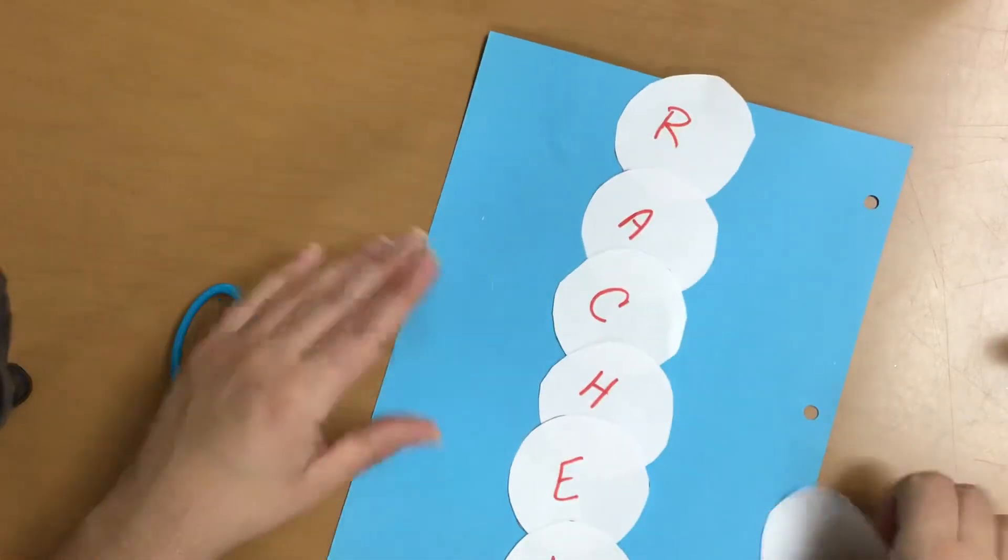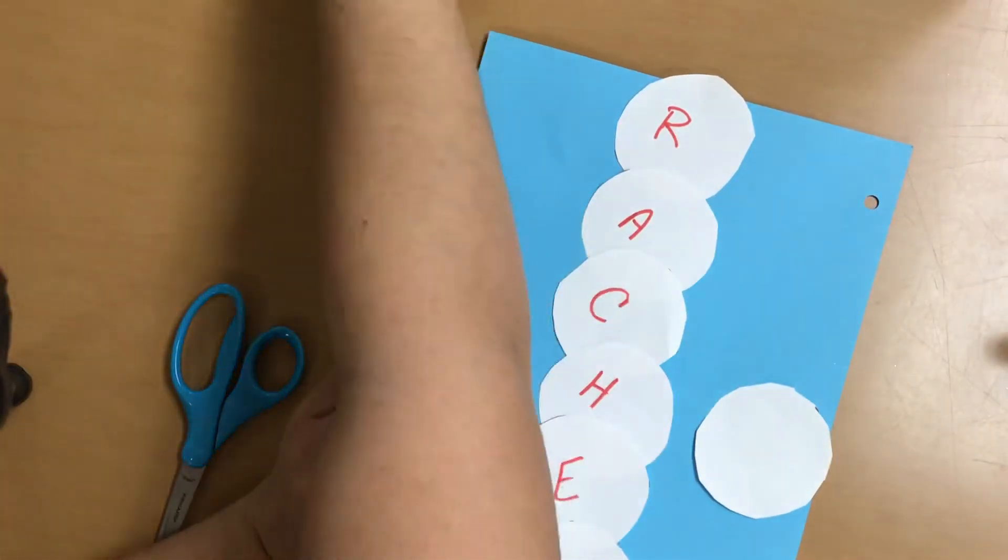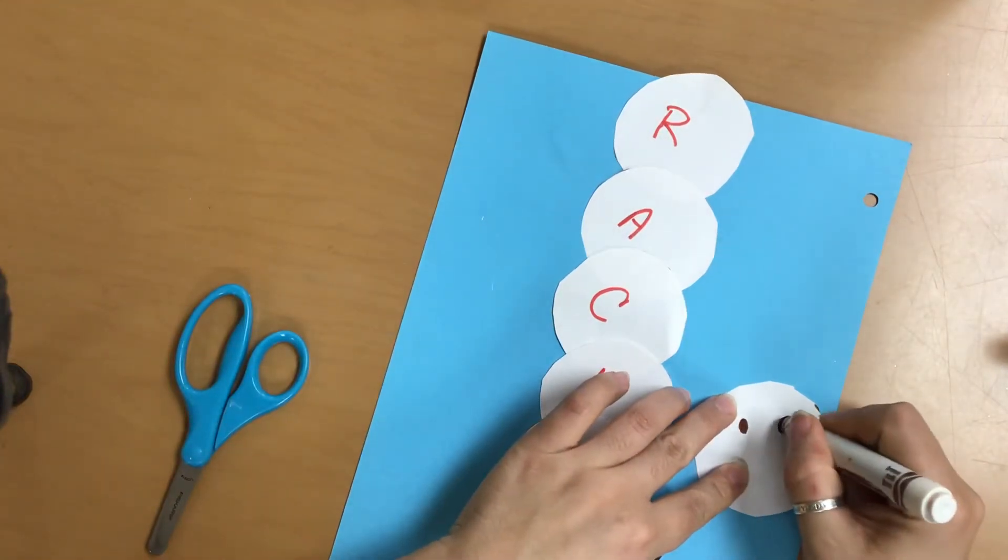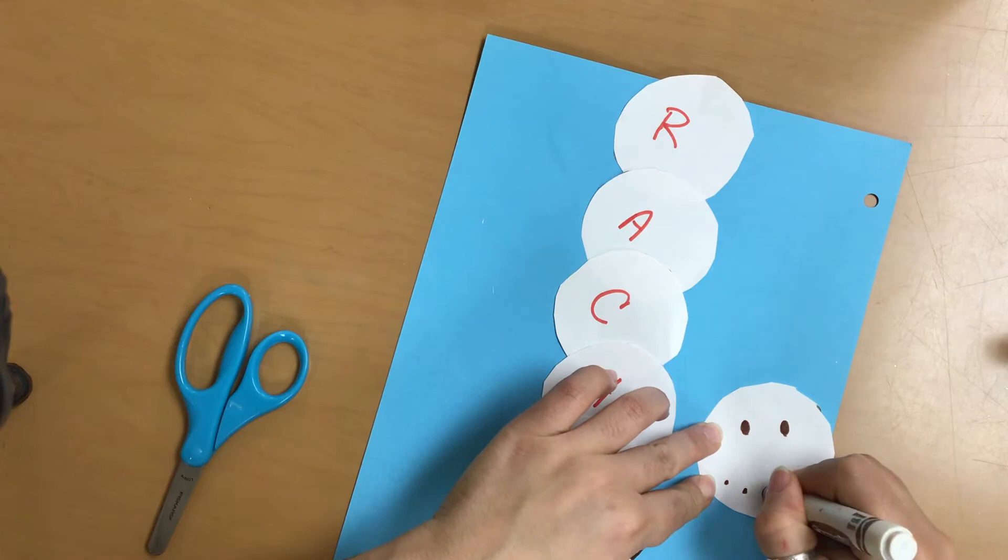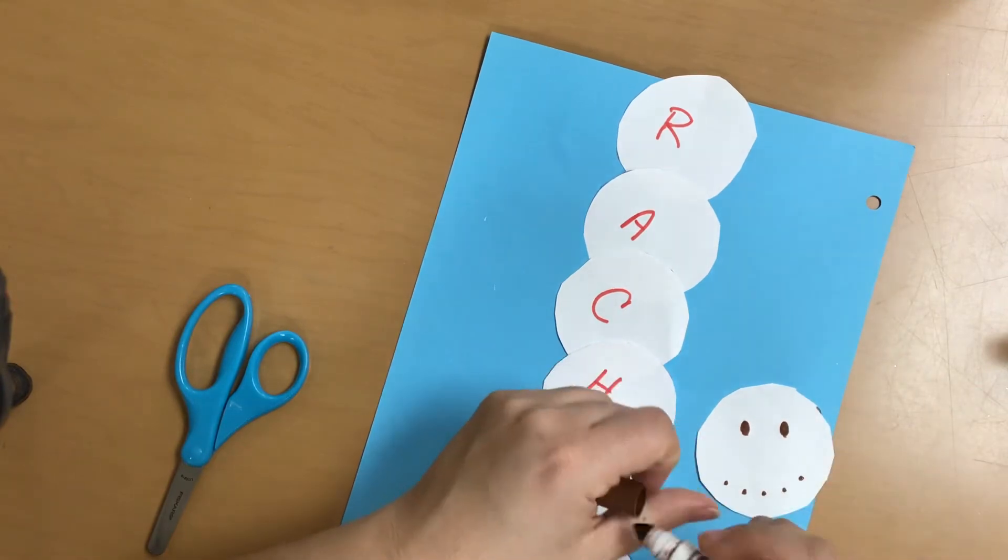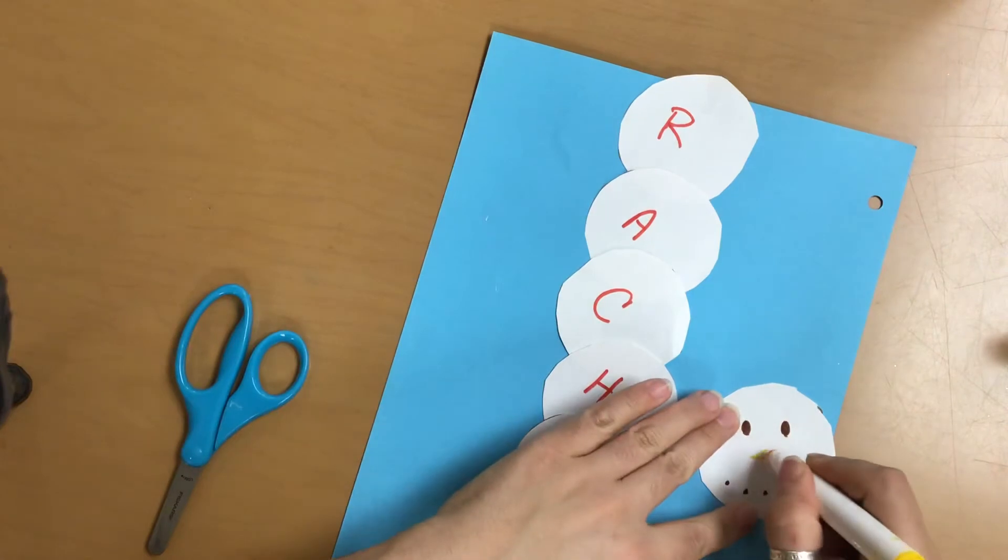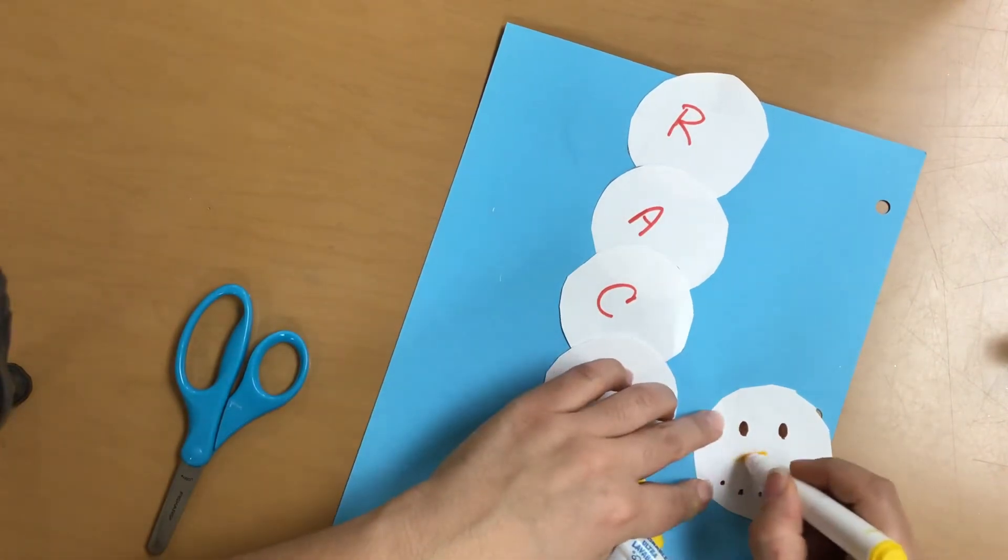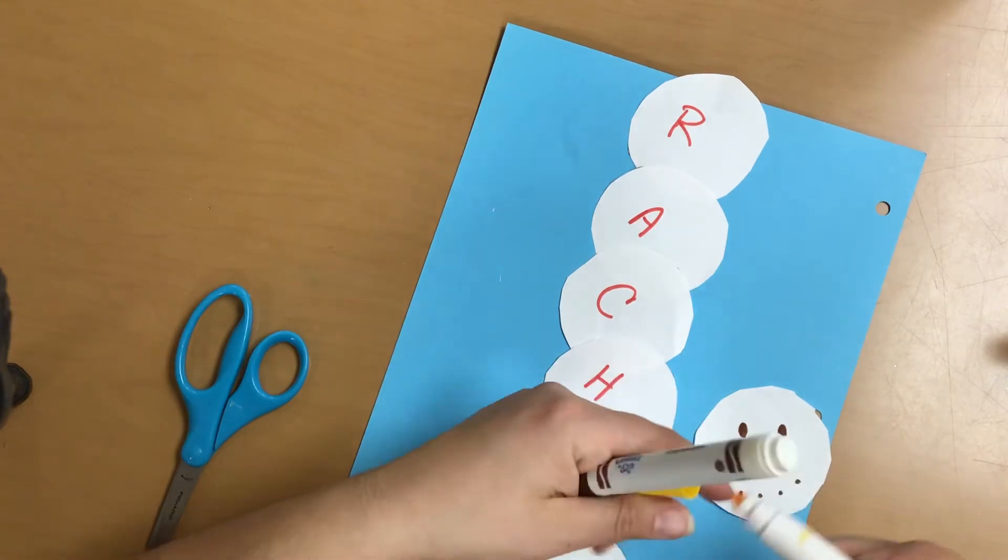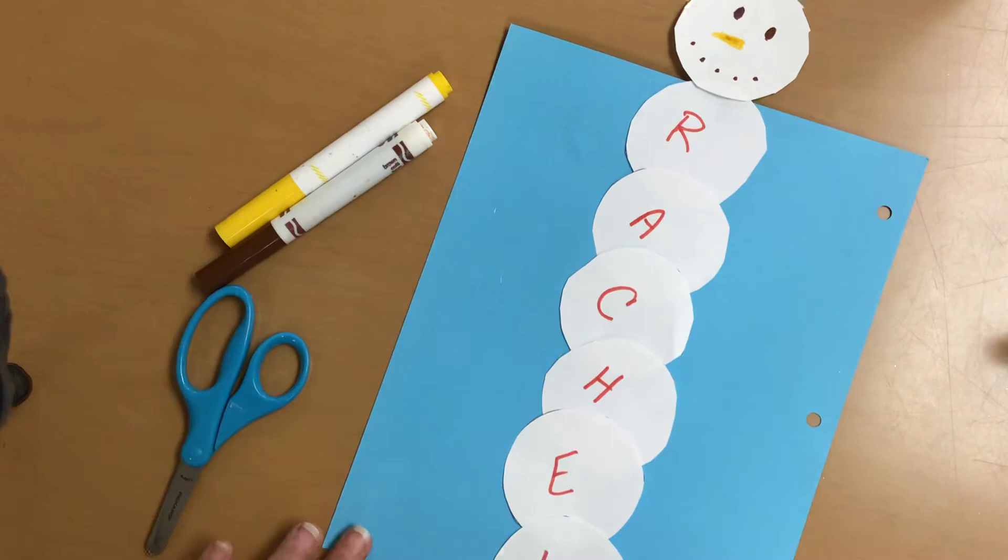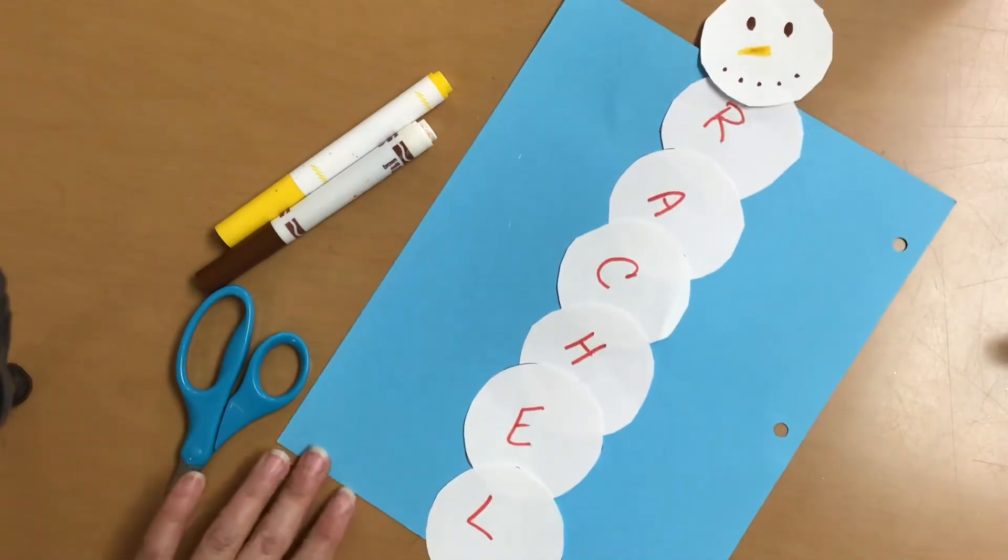There's Rachel. And then I'm going to, let's see, draw a little face like this. Give me a little nose. I don't want to say all orange, but it'll be close enough. Give me a little nose. So there I have a snowman. So now I've got a snowman that has my name. Can you see that?